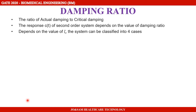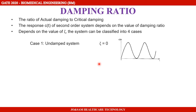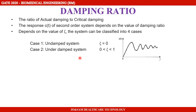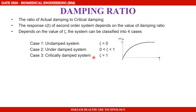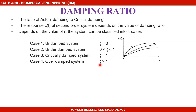By changing the damping ratio, we change the output response. When τ = 0, the system is undamped. When τ is between 0 and 1, the system is underdamped. When τ = 1, the system is critically damped. When τ is greater than 1, for values like 1.5, 2, and 3, the response becomes flat — that is the overdamped system.